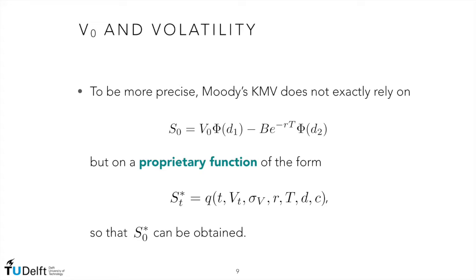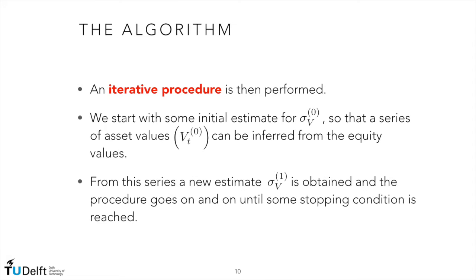These extra arguments include, for example, the quantity D — the leverage ratio of the company under scrutiny — and the quantity C, which is the average coupon paid by long-term debt of the company, if this information is available, or of a homogeneous group of similar companies. Then, thanks to an iterative algorithm, we can compute sigmaV and V0, the two quantities we still need in order to compute the distance to default, which is the fundamental quantity for the estimation of the EDF.